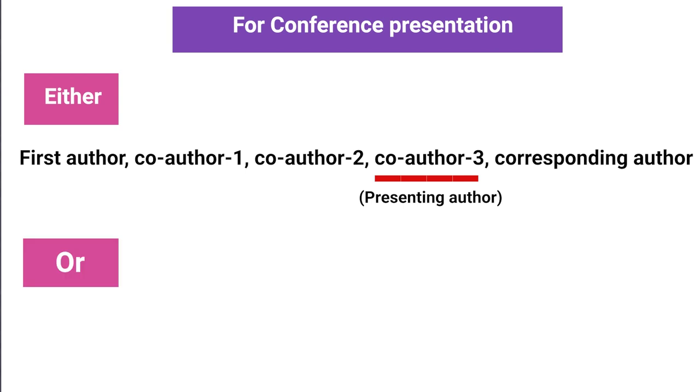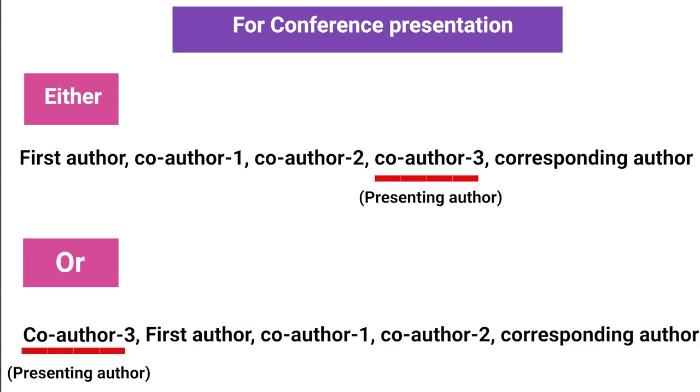Sometimes, the presenting author's name is asked to be placed first. So, in case one of the co-authors is a presenting author on behalf of all the authors, his name will have to be listed first. So, the presenting author becomes the first author for conference presentation. This is for mere convenience purpose only and has nothing to do with the actual order of authors based on their contribution to the project.